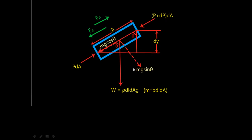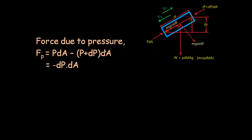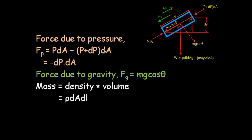We can see that this fluid element has a weight W equal to mg, and if we resolve this weight into its components, the sine component of weight has nothing to do with the flow, and the cos component of the weight is opposing the flow. So we denote that by Fg, which is the force due to gravity. Force due to pressure Fp is PdA minus (P+dP)dA, and force due to gravity is mg cos θ.